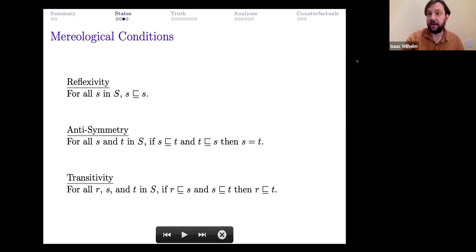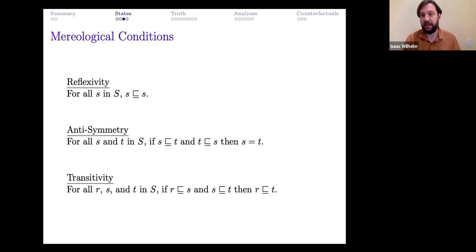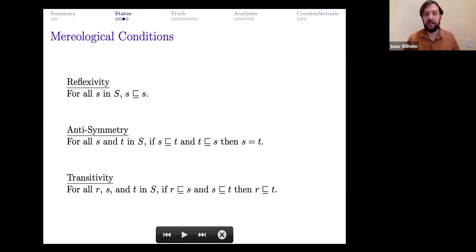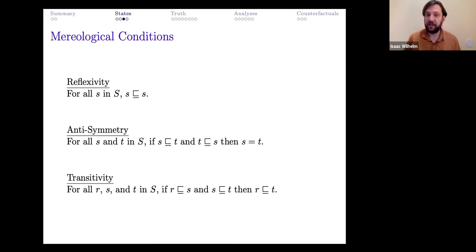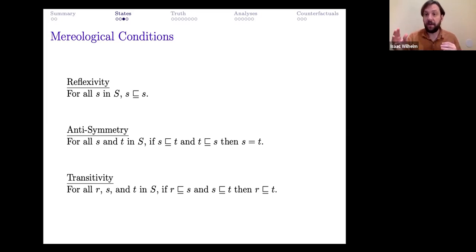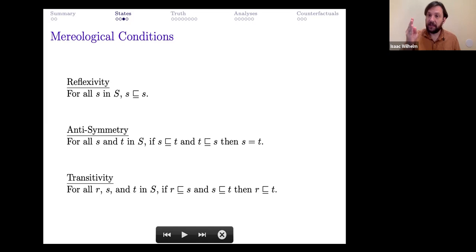The theory consists of six conditions. The first three are the simplest. First, this part-of relation is reflexive — every state is part of itself. Second, it is anti-symmetric — if one state is part of another and that other is part of the first, then those states are identical. Third, it is transitive — if a first state is part of a second, and the second is part of a third, then the first state is part of the third as well. Together these say the parthood relation is a partial order.